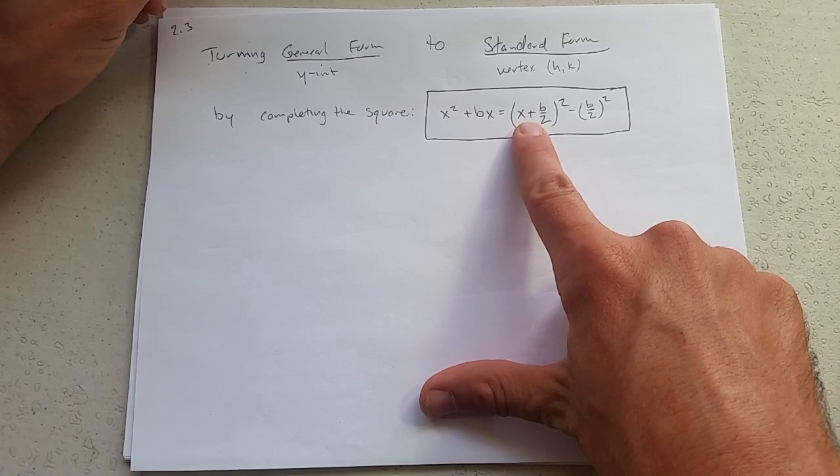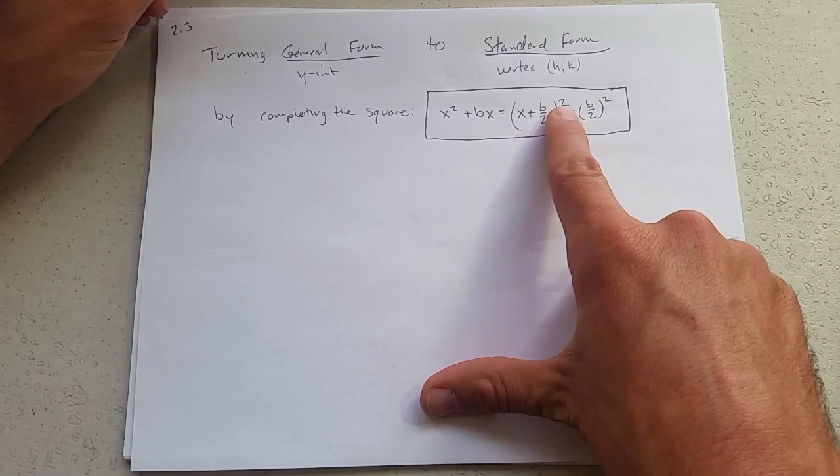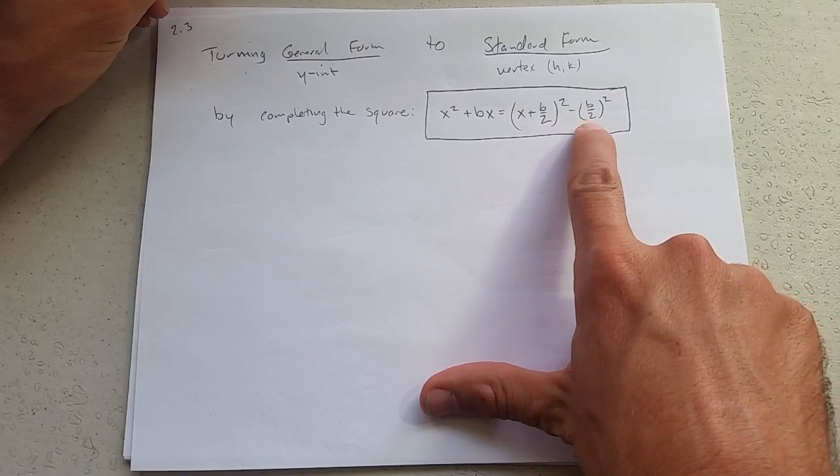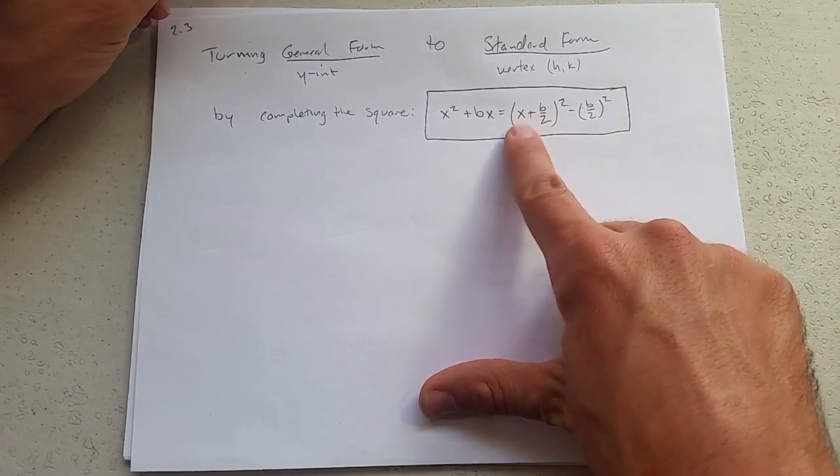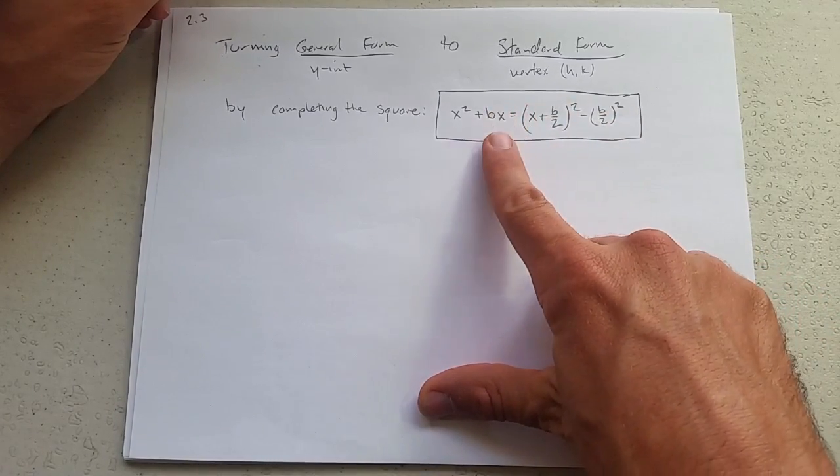Plus b over 2 squared. This will cancel the minus b over 2 squared. You should foil this out for yourself to see that you actually get back to here.